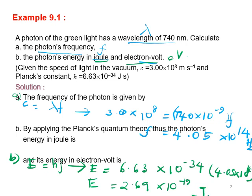The next step is to express the energy in electron volts. To convert, you need to divide the energy in Joules by 1.60 × 10⁻¹⁹, and you will get the answer in electron volts.